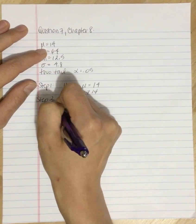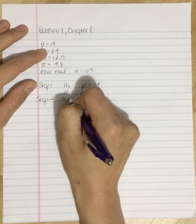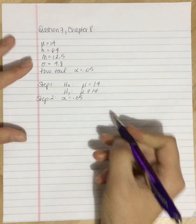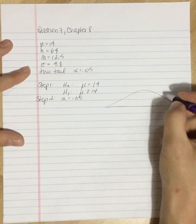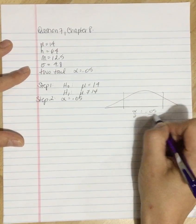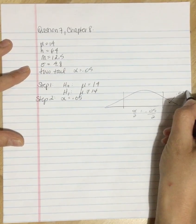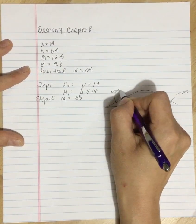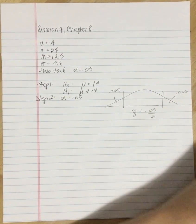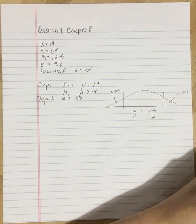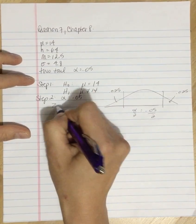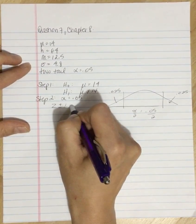Step two, our alpha level is 0.05 and this is a two-tailed test. So we're going to have alpha divided by 2 in each of our tails. If we go to the back of the book and look up the proportion in the tail that is equal to 0.0250, that is a z-score of plus or minus 1.96.